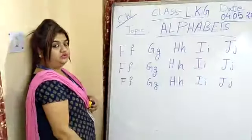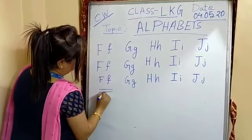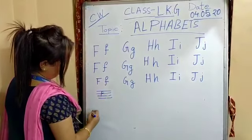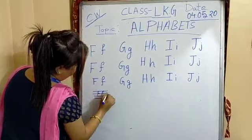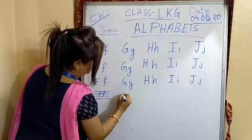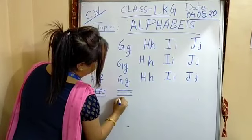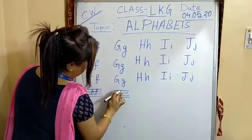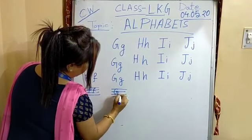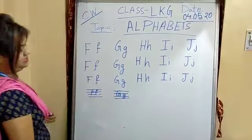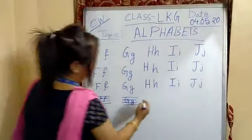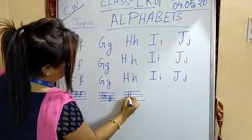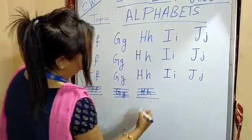In our last class I told you, for capital letters you have to use the lines. The first three lines you have to maintain for capital letters, and below that you have to write the small letters. This way you have to do. See, children? In your copy these four lines are there, yes or no? For capital letters you have to use the first three lines. For small letters you have to write like this. This is capital letter. This is small letter.